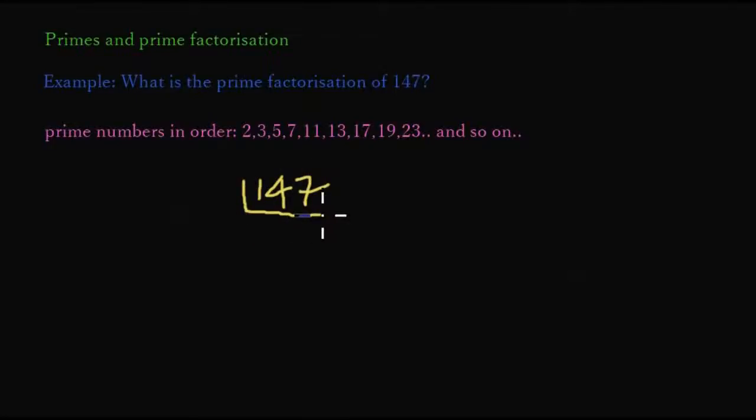147, like this. Then check whether 147 is evenly divisible by the smallest prime number, 2. Since 147 divided by 2 does not give us a whole number, we move on to see if 147 is divisible by the next smallest prime number, 3.